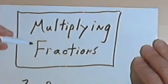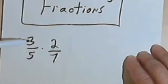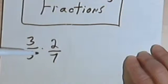This video is going to be about multiplying fractions, and this is really pretty straightforward. So let's say I've got these two fractions: 3 over 5 times 2 over 7, and I'm multiplying them.